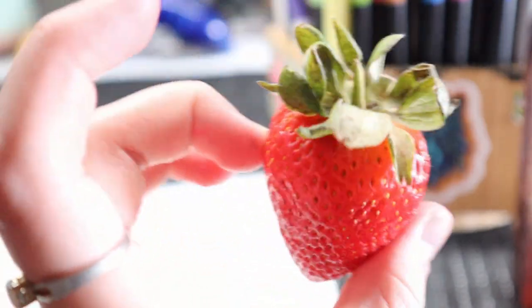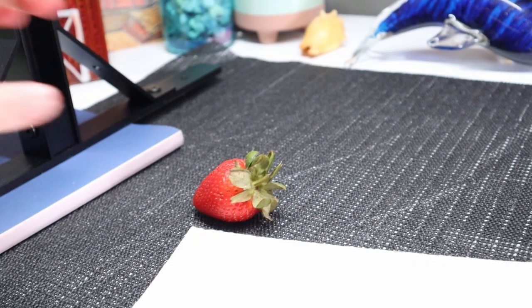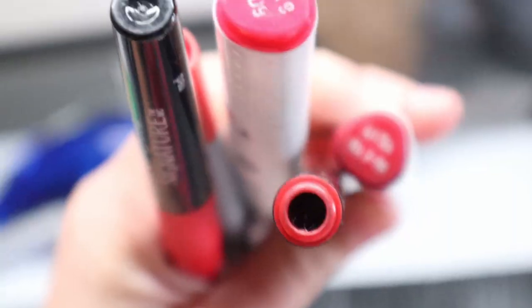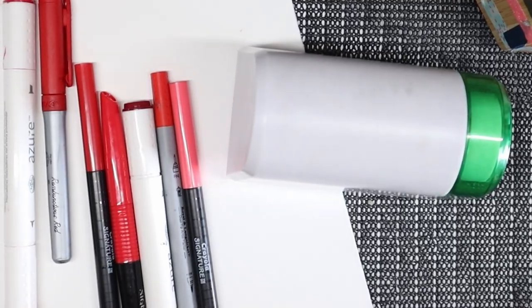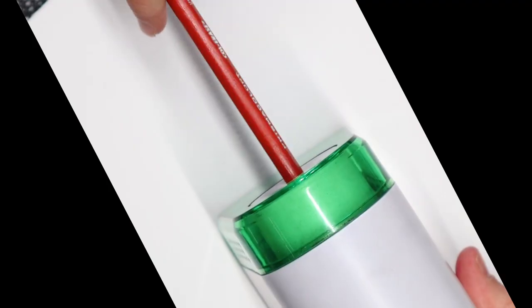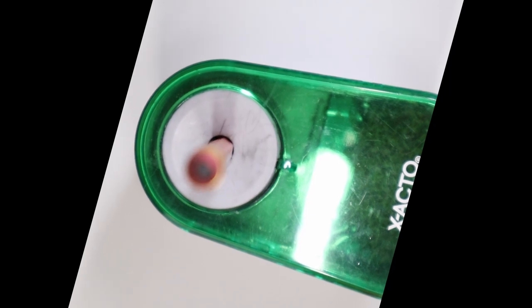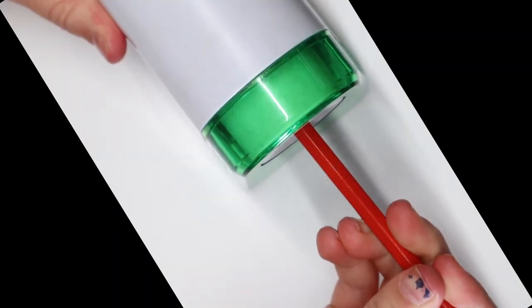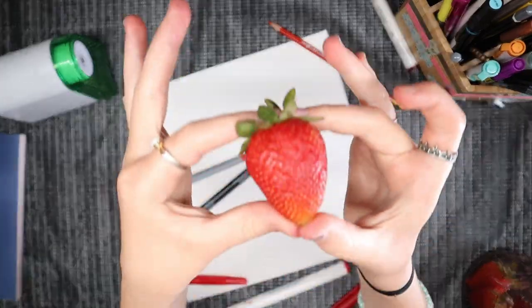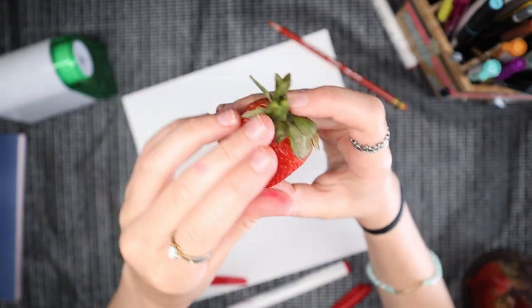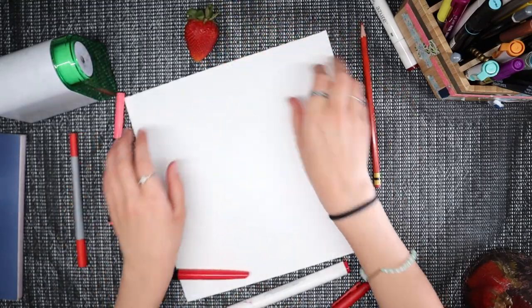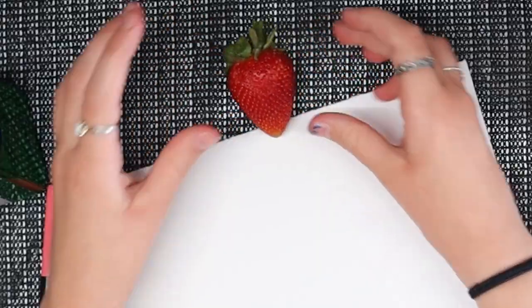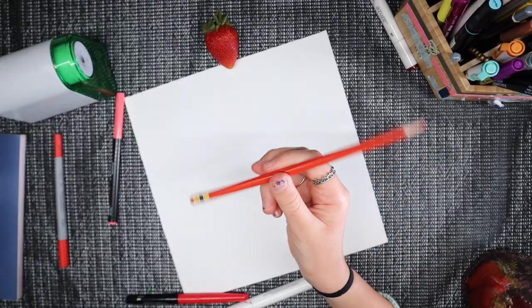So now we have a beautiful strawberry right here and we're going to make a dragon out of it. We've got some red markers here and a sharpener. Put it right there and let's get drawing.